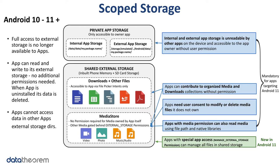The three primary results of the scoped storage change are: first, full access to external storage is no longer available to apps; second, apps have unrestricted access to their own app storage — no permissions needed to read and write to their own external storage directory, and that data gets deleted when the app is uninstalled; third, apps can no longer access data in other apps' external storage directories.